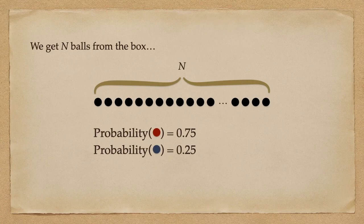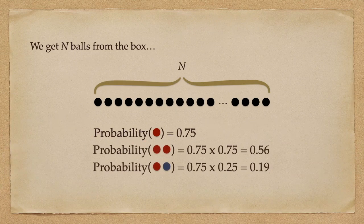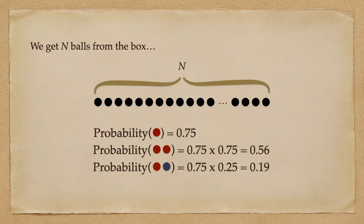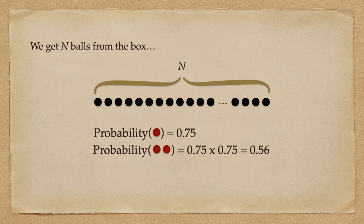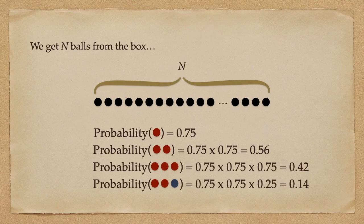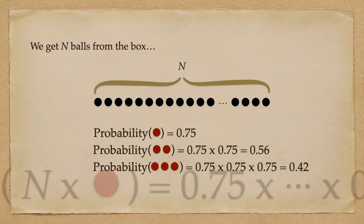If we take one ball, the most likely outcome is the red ball. When we take two balls, the most likely outcome is two red balls. We observe the same when we take three balls. So intuitively, when we repeat the experiment n times, the most likely sequence is the all red ball sequence, whose probability is 0.75 to the power of n.